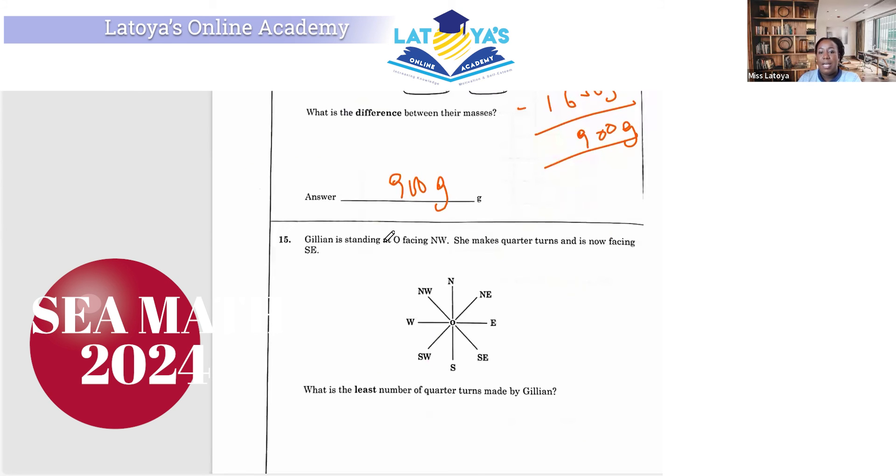Anna is standing at O, this point here, and she's facing northwest. She makes quarter turns and is now facing southeast. What is the least number of quarter turns made? Now as you can see, from here to here is a half turn. So that means she made two quarter turns. One here, and another here. So the answer will be two quarter turns.